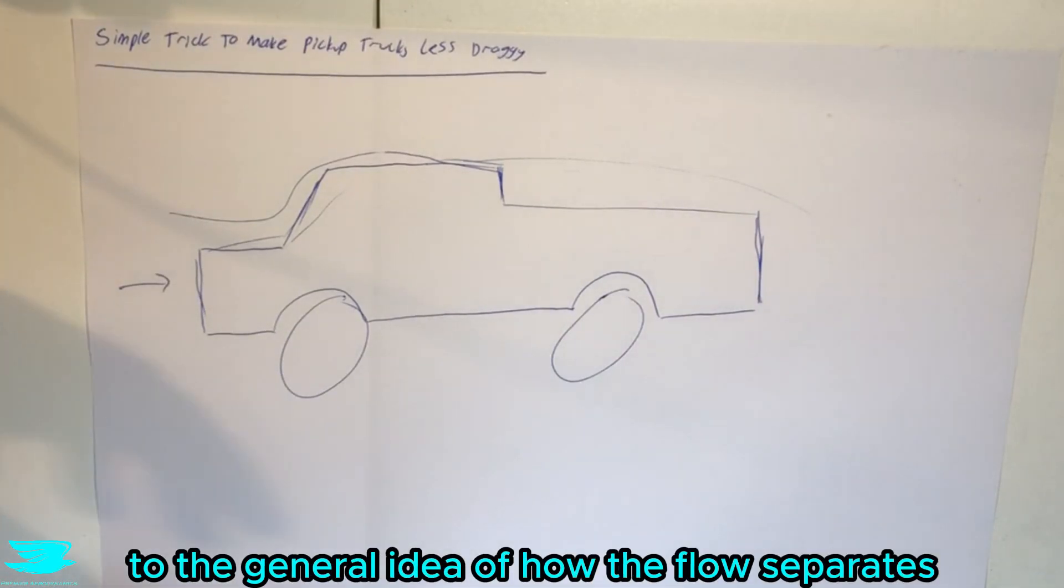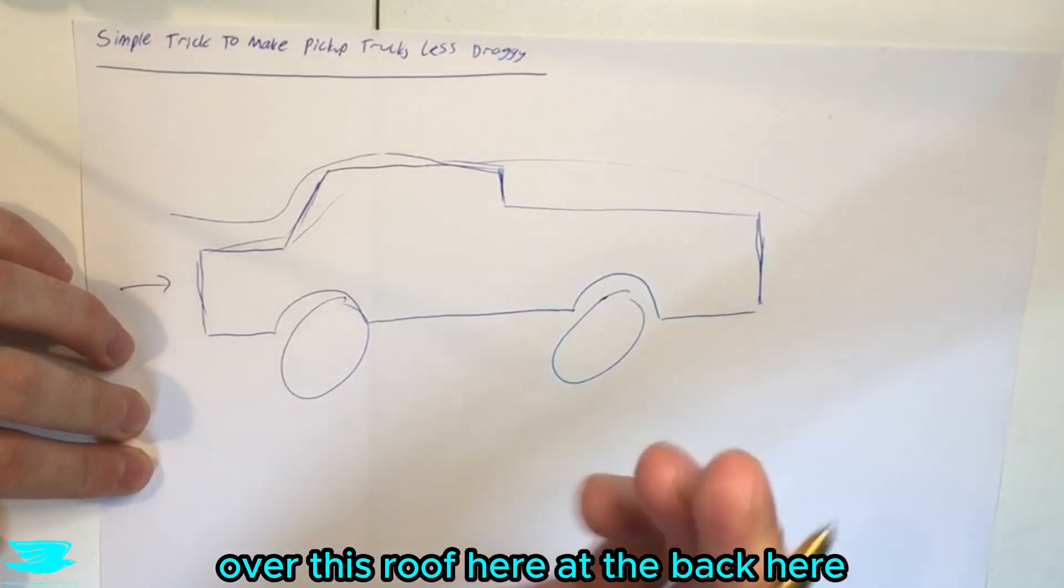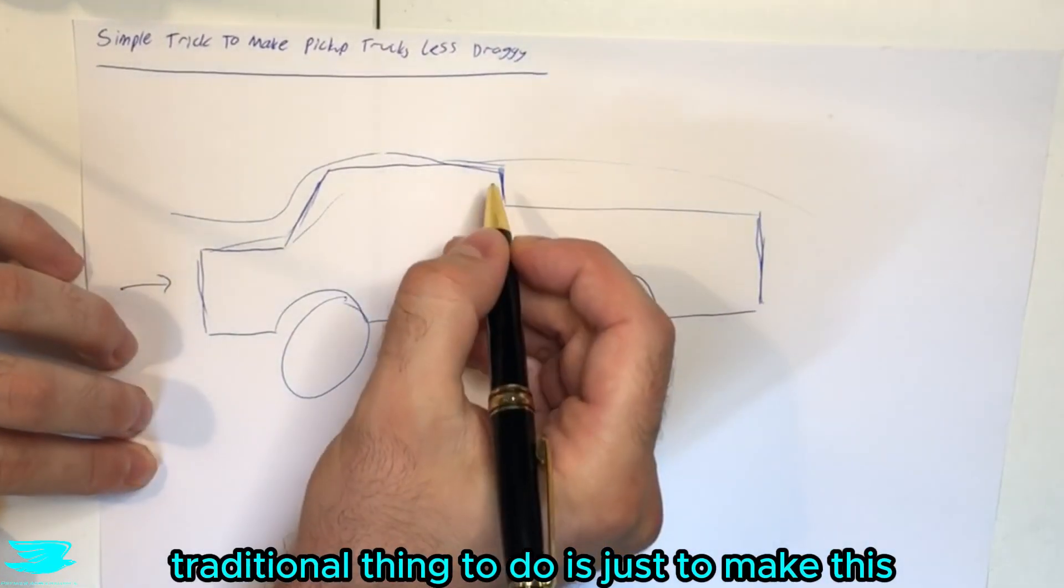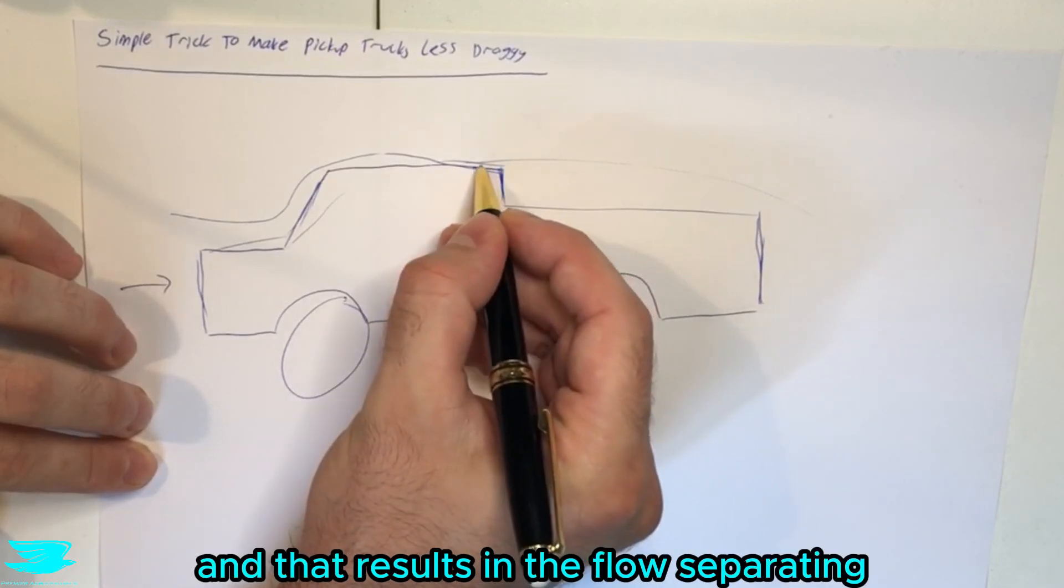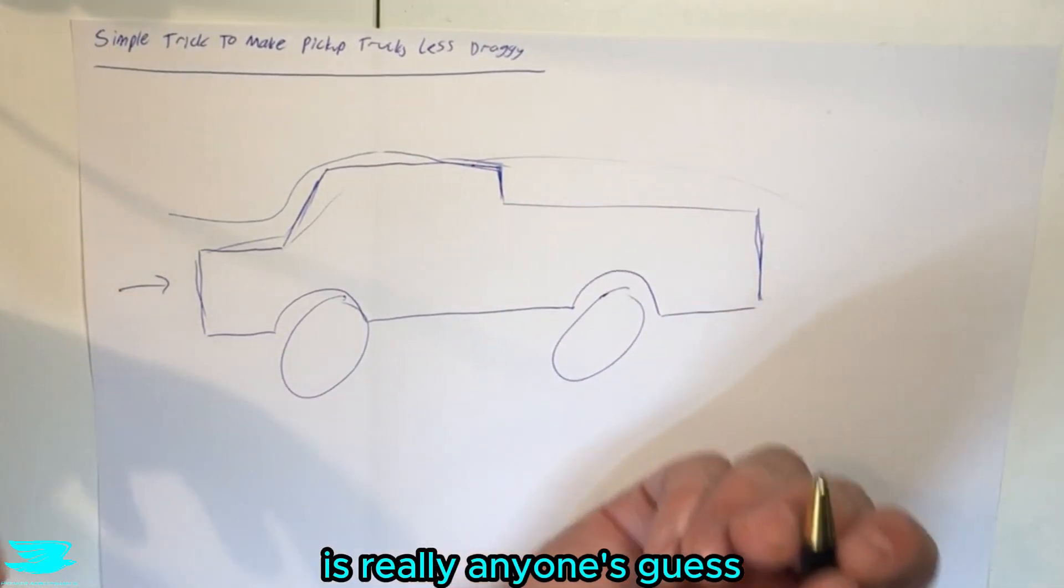That leads us to the general idea of how the flow separates over this roof at the back. Generally the traditional thing to do is just to make this a very sharp edge and that results in the flow separating and where it will hit next is really anyone's guess.